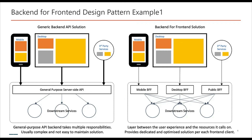In this example we show a generic microservices setup with a single API gateway as the single entry point. As the application grows, it becomes difficult to maintain requirements for different frontend types. Hence the solution is backend for frontend, shown on the right hand side, where we have different BFF layers between the microservices and the frontend technology — mobile BFF, desktop BFF, and third-party BFF. This layer can control the amount and kind of data which flows to the respective frontend or clients.